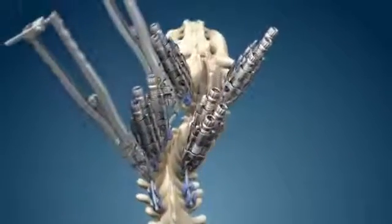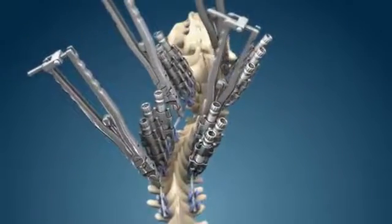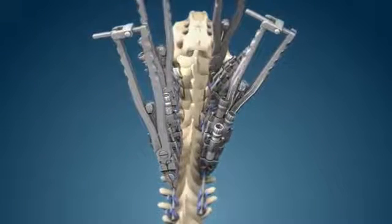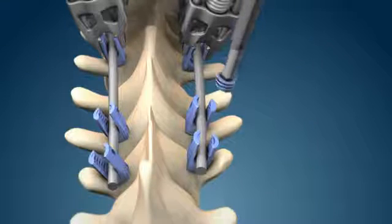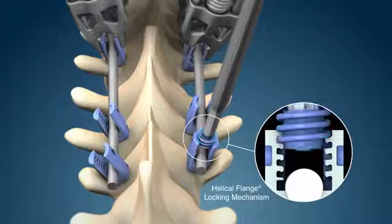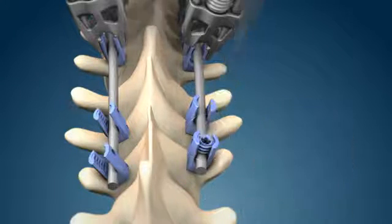Using hex end wrenches or rod grippers, the rods are simultaneously rotated into the desired straight coronal plane orientation. Derotation helical flange plugs are positioned and provisionally tightened to maintain the desired coronal plane orientation.